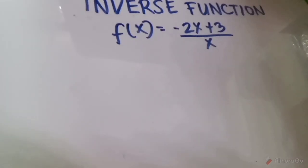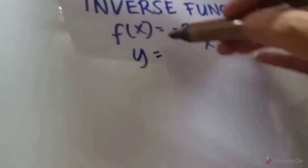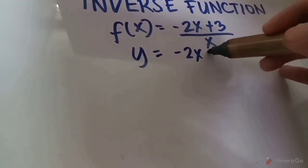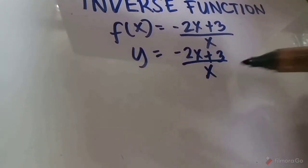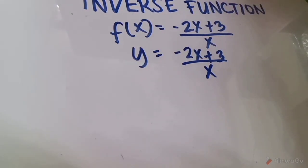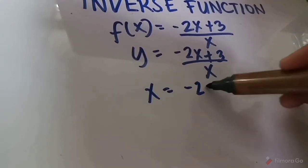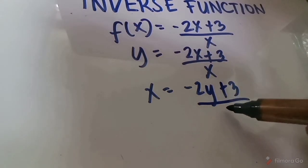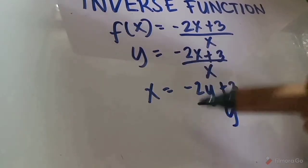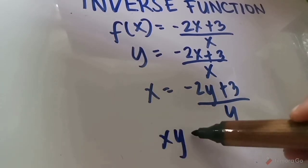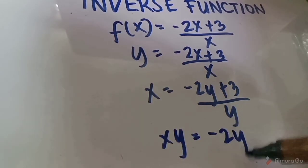Next, f(x) = (−2x + 3) / x. Step 1: Change f(x) to y, so y = (−2x + 3) / x. Step 2: Switch x and y: x = (−2y + 3) / y. Step 3: Cross multiply — xy = −2y + 3.